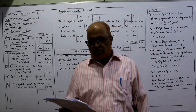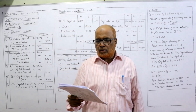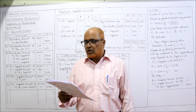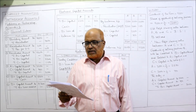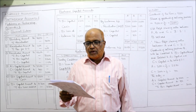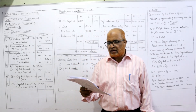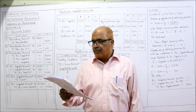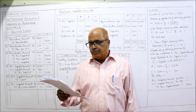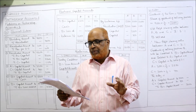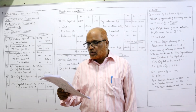Now see the 21st problem. A, B, and C carried on business in partnership sharing profits and losses in the ratio of 3:2:1 on 31st December 2005. The balance sheet of the firm stood as follows: sundry creditors, capital accounts of A, B and C are given, along with cash, debtors, stock, and building.